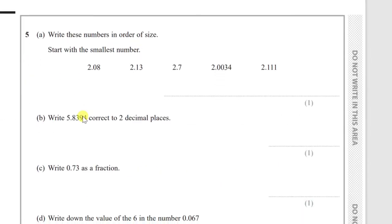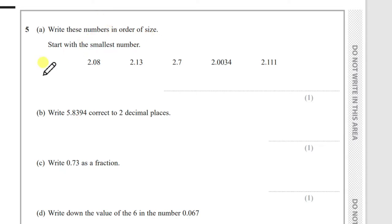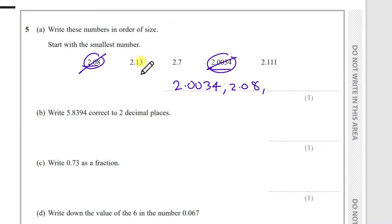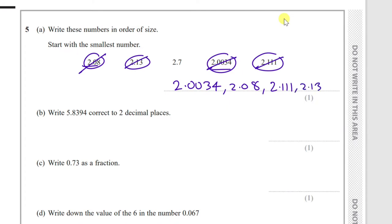Question 5: write these numbers in order of size, smallest first. Look at the first digit — all the same. Look at the first decimal place: 0 is smallest, then compare within the 2.1 group by the next digit. Final order: 2.08, 2.10, 2.111, 2.13, 2.7.